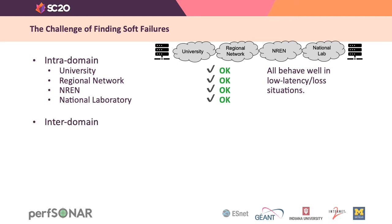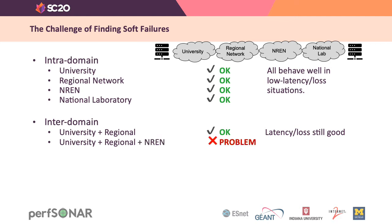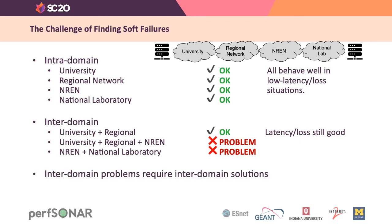You might test out the university network and the regional network together, and things still might be good because the latency and loss with that pair is just fine. Add in the NREN, and all of a sudden the problem appears. Test the NREN with the national laboratory, and the problem appears again. So in this case, you have an interdomain problem. You have to work with more than one network operator, and those kinds of problems require interdomain solutions. And for that, you need a set of common tools, and you need cooperation.